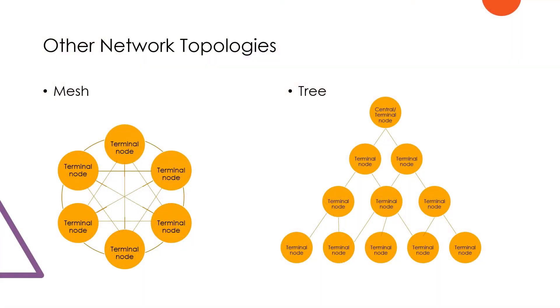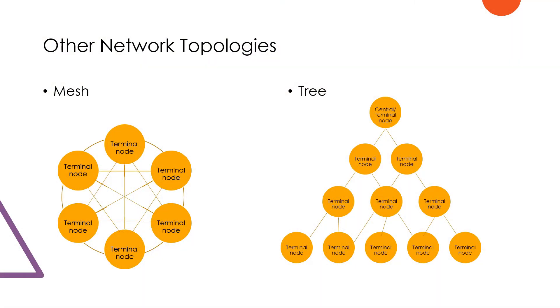A tree topology is like a hierarchical star, where every node is a star to the layer below it. This is also very common in structured cabling systems.